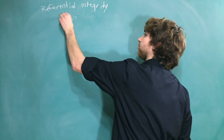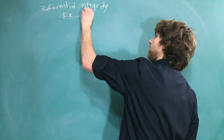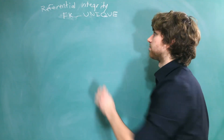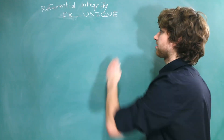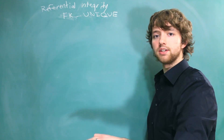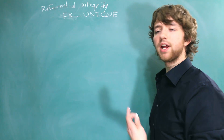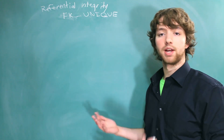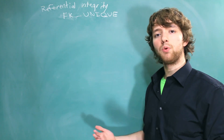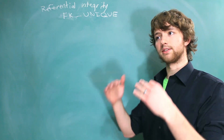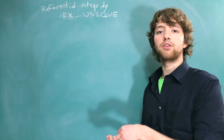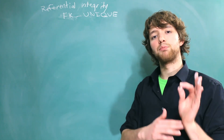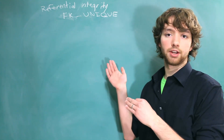A foreign key has to reference a column that is unique. This would include the primary key and any columns labeled unique. We'll discuss the syntax later, but for now think of it conceptually — every single row for a column has to have a unique value, so that every single row represents a specific entity. That goes back to the last video where we talked about entity integrity, which is a prerequisite to referential integrity.